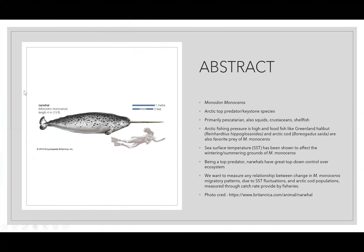My abstract: Monodon monoceros is the scientific name of the narwhal. On the left is a picture of a narwhal with a human for scale from Encyclopedia Britannica. It's an arctic top predator and a keystone species, meaning its addition or removal from the environment would cause great ecological changes. It's primarily pescatarian, mostly eating fish but also squids, crustaceans, and shellfish. There are cool videos of narwhals kicking up sediments on the sea floor to stir up benthic species.